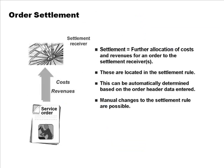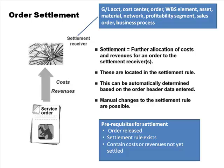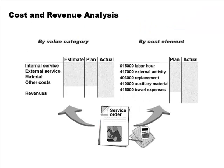For settlement of the service order, prerequisites are that the order is released, a settlement rule exists, and there are unsettled costs or revenues. The settlement receiver can be many different types of objects. Costs can be viewed by cost element or by value categories. This completes the process of enterprise asset management and customer service.